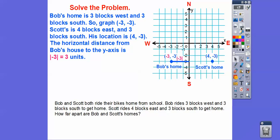And then, the horizontal distance from Bob's house to the y-axis is the absolute value of this negative 3 right there, which is, what's the absolute value of -3? It's equal to 3. So this distance is 3. Remember, distance is always positive. So even though this coordinate is a negative, we always take the positive value to find distance right here.